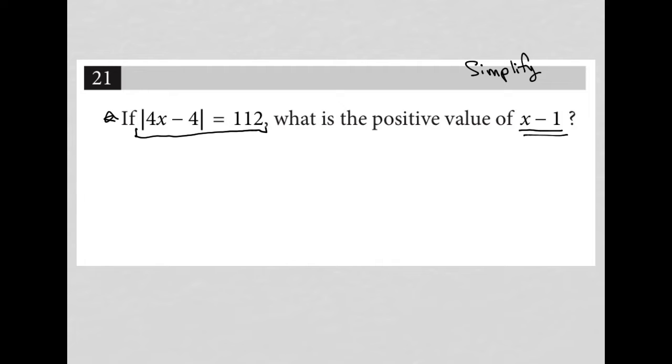The reason why it's asking for the positive value of x minus 1, instead of just the value of x minus 1, is because any time you solve an absolute value equation, you're going to get two answers.